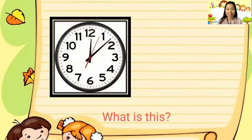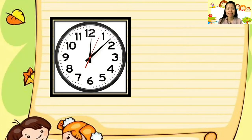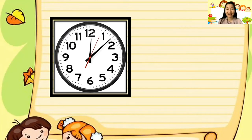What is this? This is a thing we use to see what time it is — sometimes before we take our meals, for breakfast, lunch, dinner, and before we go to bed. Yes, that's right. It's a clock. Can you say 'a clock'?